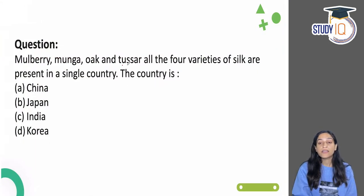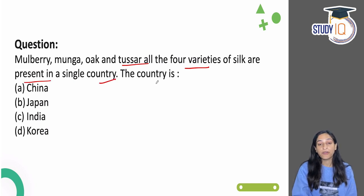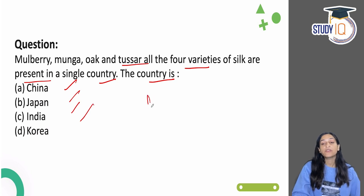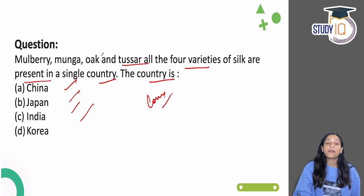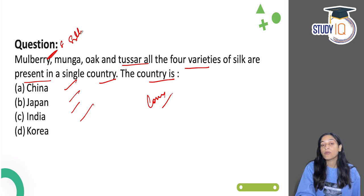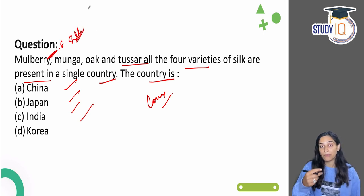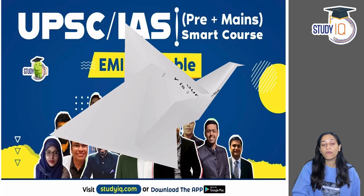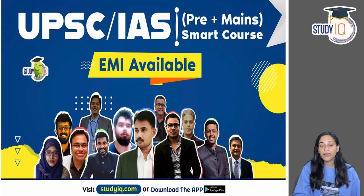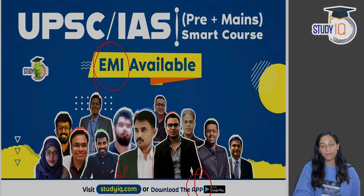Question for you: mulberry, munga, oak, and sir — four varieties of silk are present in a single country. The countries are China, Japan, India, Korea. You can tell me in the comment section, because mulberry is also famous for silkworms — silkworms feed heavily on mulberry leaves. You can participate in the Telegram poll for the answer. For courses, visit the website, download the application, or courses are also available on EMI. Thank you so much.